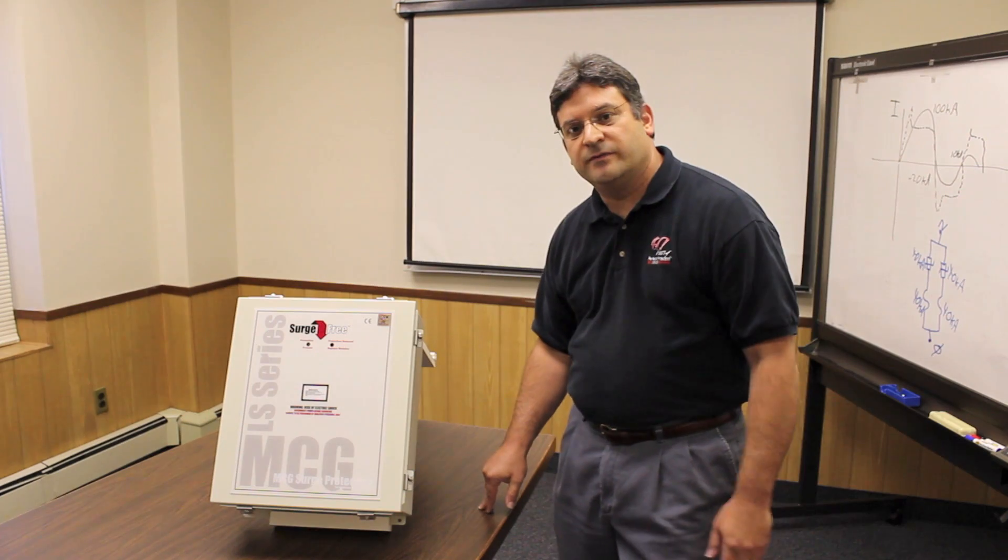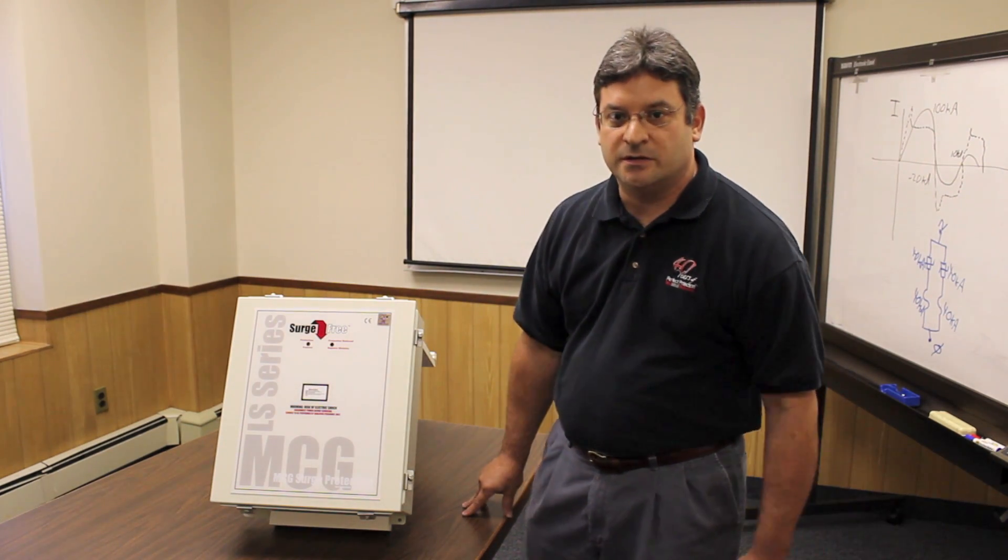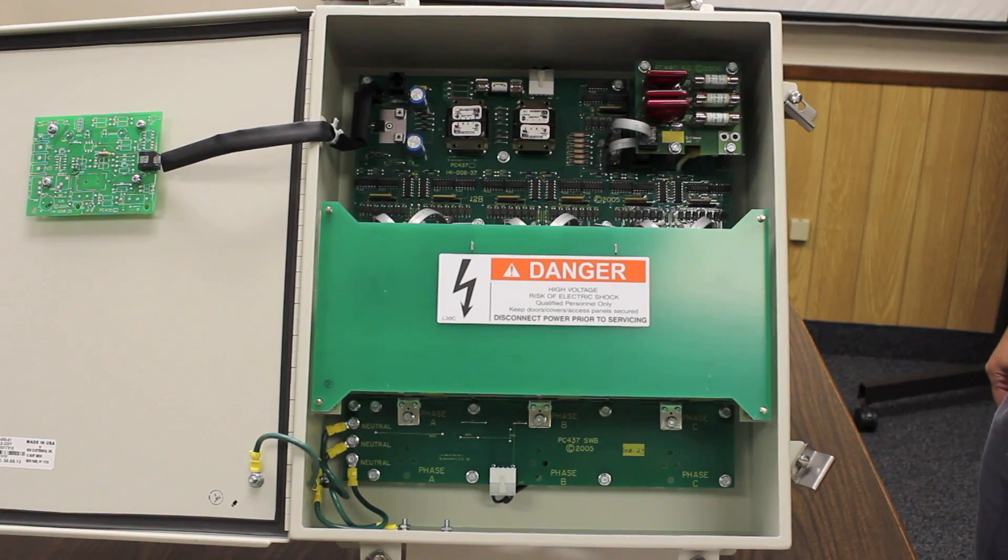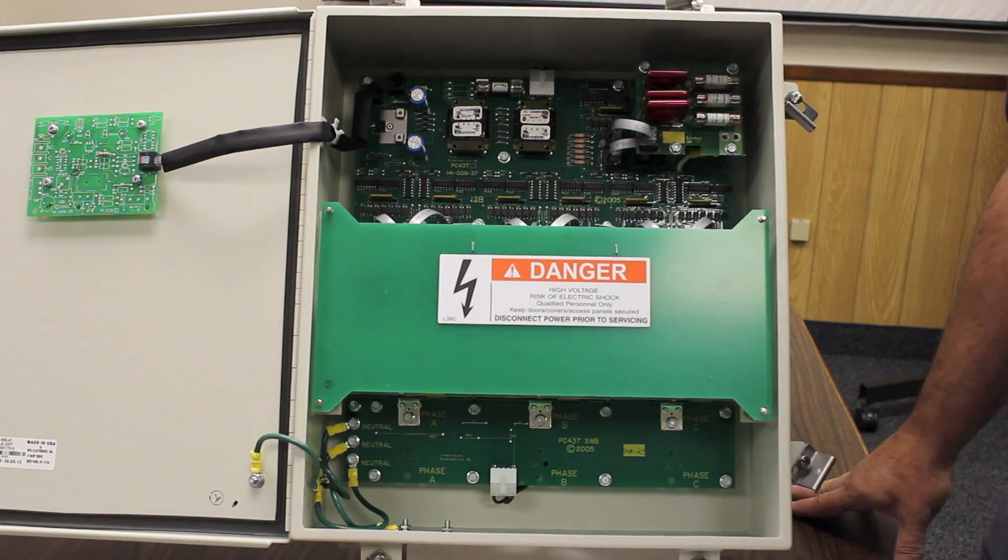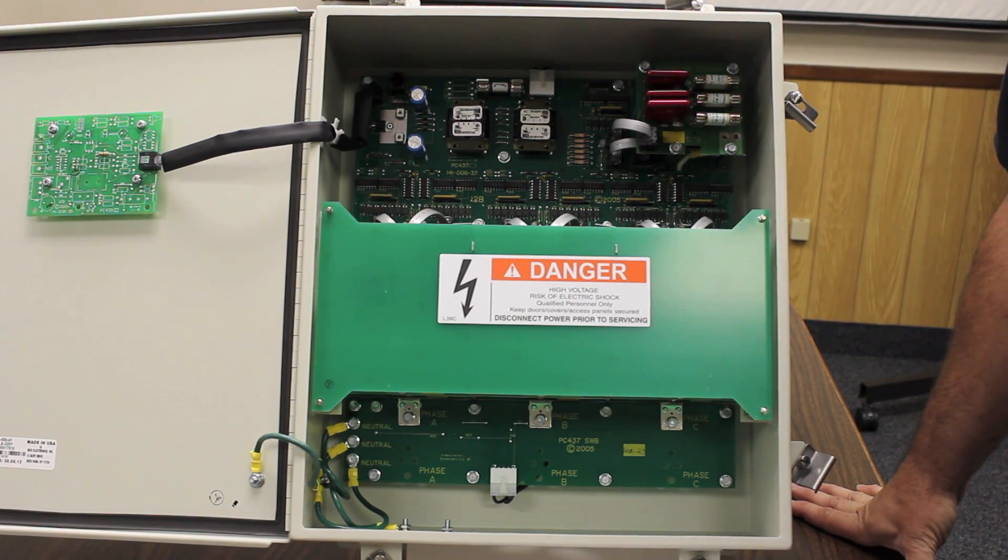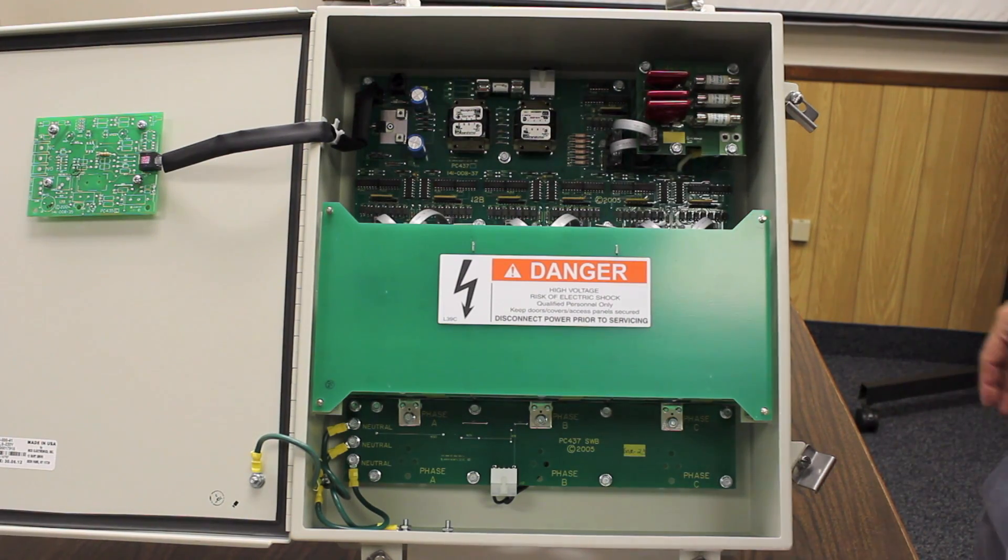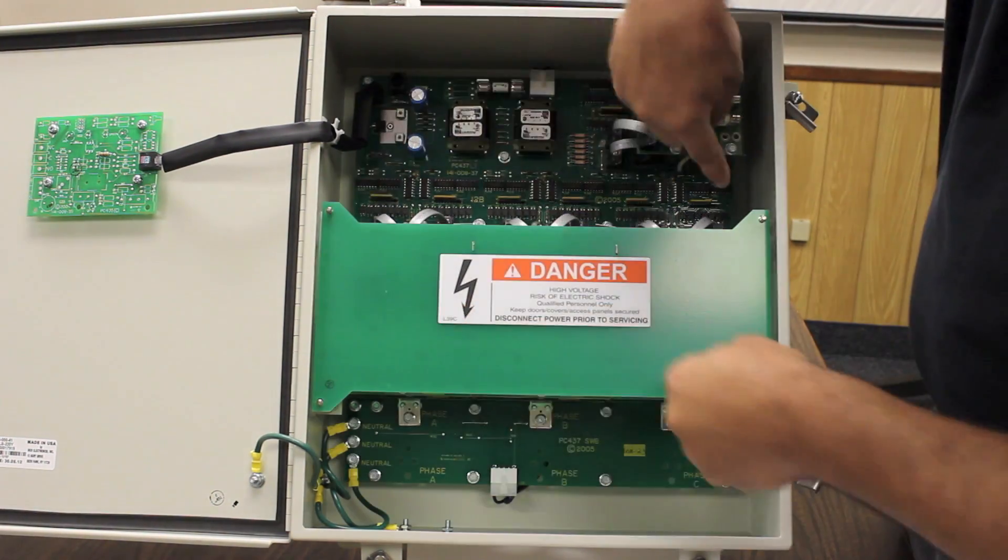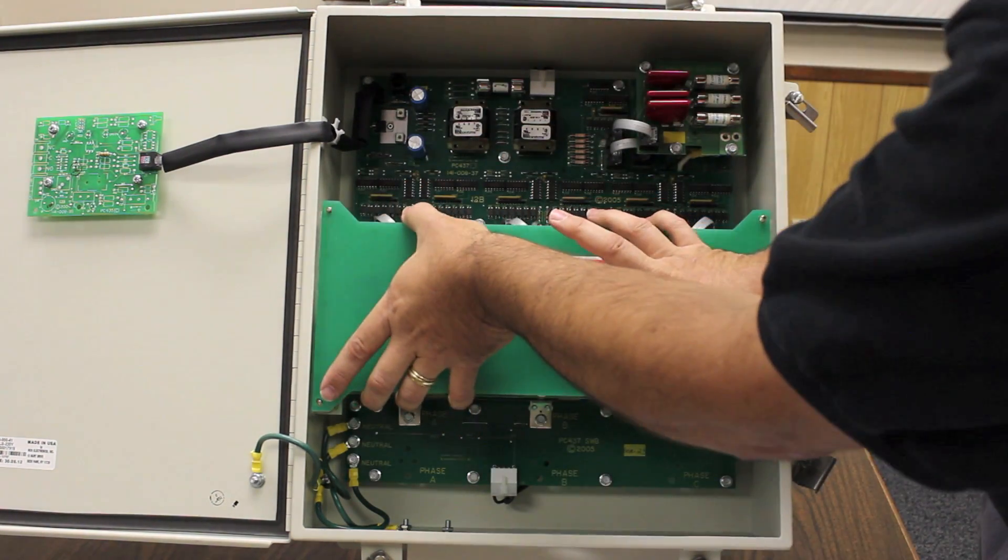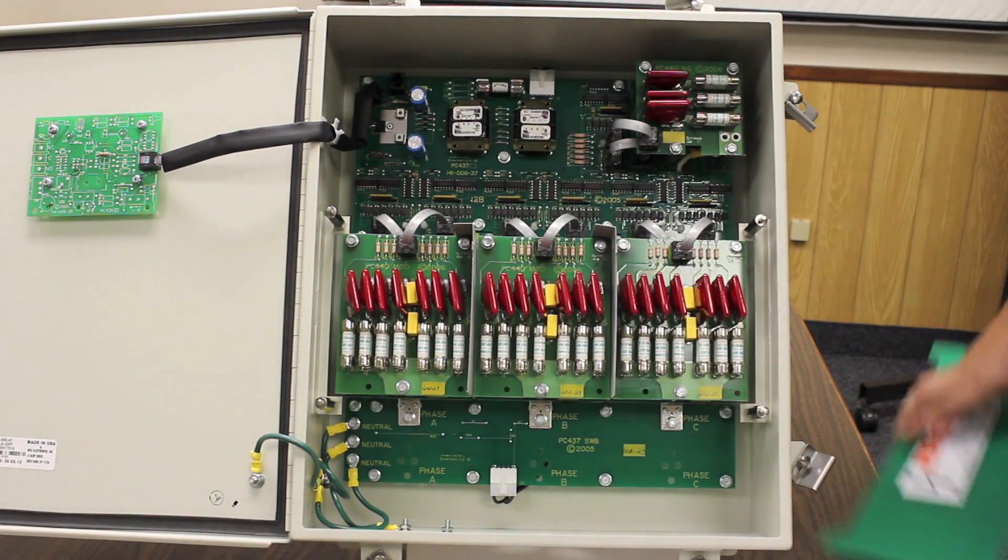I want to show you the inside of an LS protector so you can see the construction of the product now. This is the top of the line 560 LS model, rated at 560,000 amps per phase. To show you the modules, I removed the four thumb screws on the module cover, so I'll just pull this off so you can see the modules.